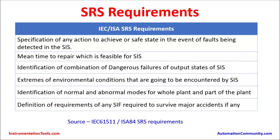Mean time to repair (MTTR) feasible for the facility must be identified. Dangerous combinations of output states of the SIS must be documented. Extreme environmental conditions encountered by the SIS must be noted. Normal and abnormal operating modes for the whole or part of the plant must be identified. Finally, requirements for any safety instrumented functions required to survive major accidents must be defined. This concludes the complete steps and requirements based on IEC 61511 and ISA 84 for developing the SRS. Thank you.